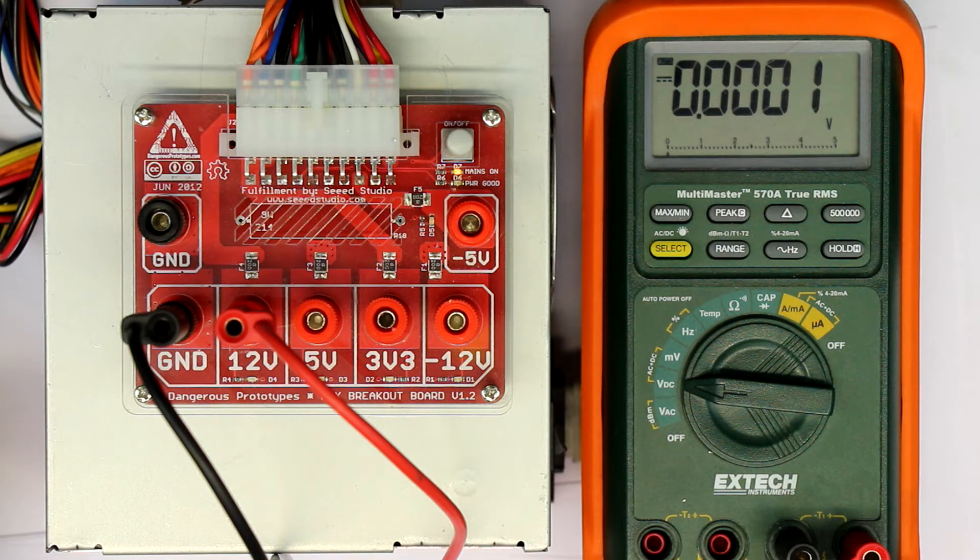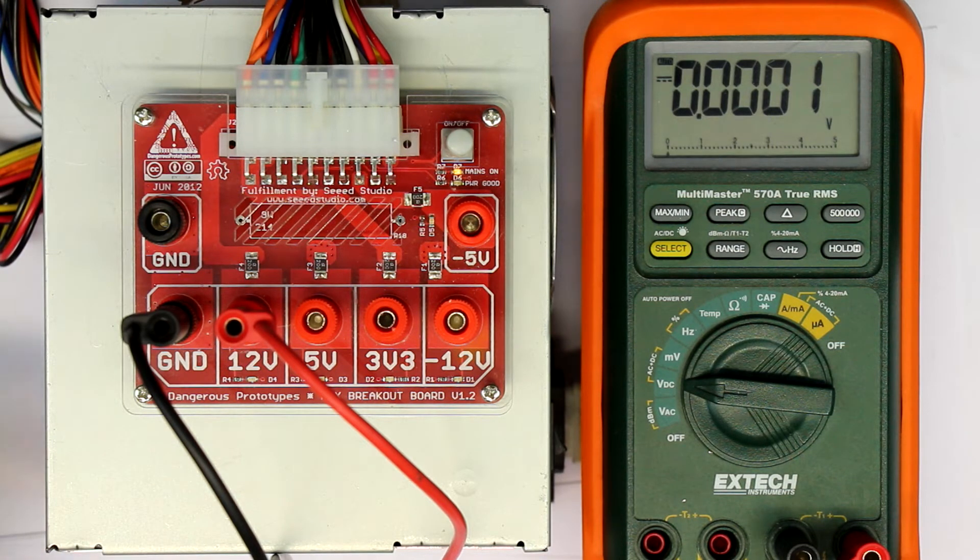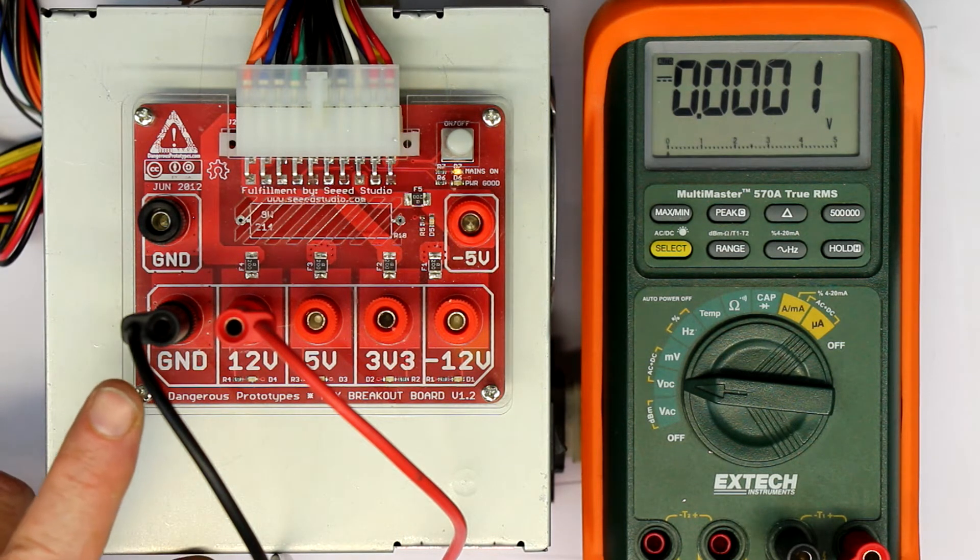And the cheapest way to get additional power sources is just to convert an old ATX computer or PC power supply into a kind of lab power supply.